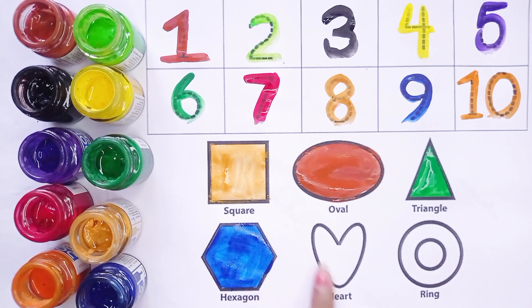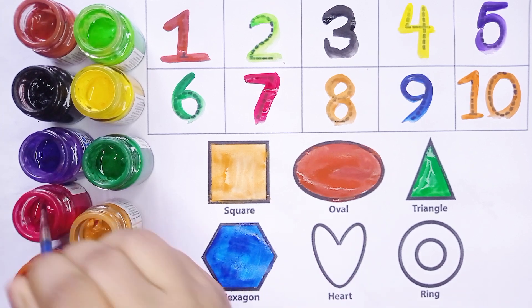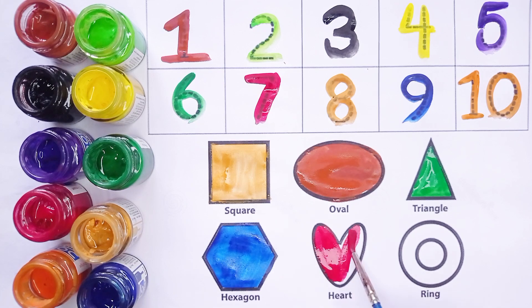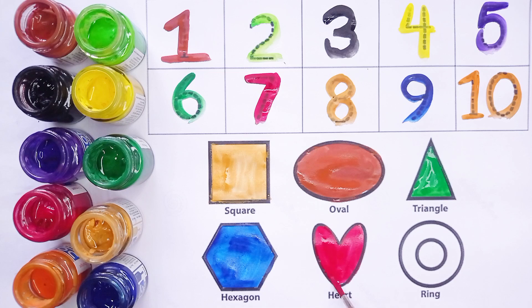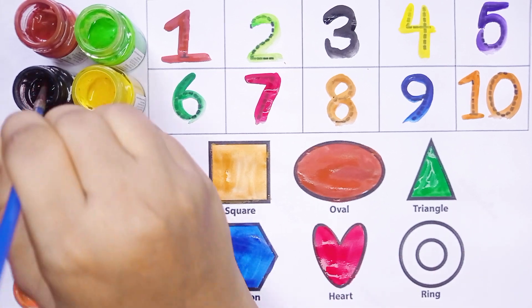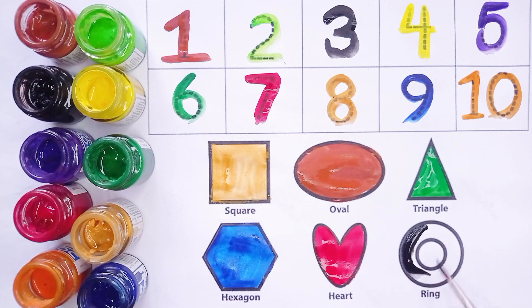This is a heart shape. Which shape? Heart. Red color. This is a ring shape. Which shape? Ring. Black color.